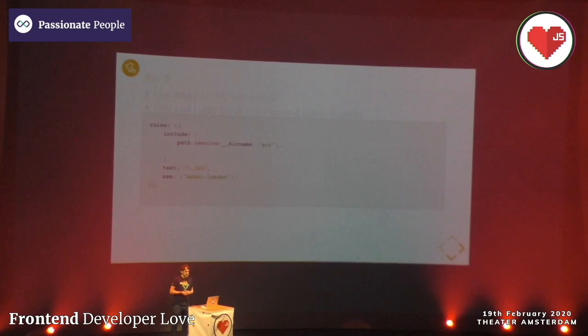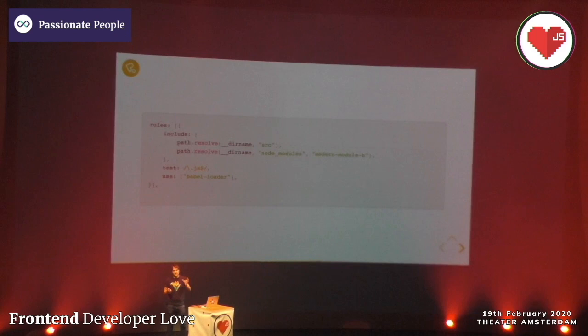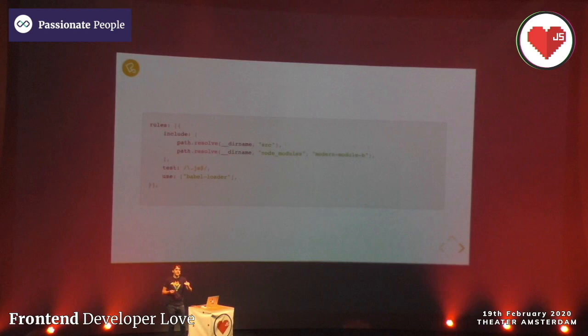My tip: use test for file extensions and include for directories and absolute paths. The nice thing is you can also add additional modules that require transpilation - for instance if they only support modern browsers and you need to support all browsers - but we don't transpile everything in node_modules.